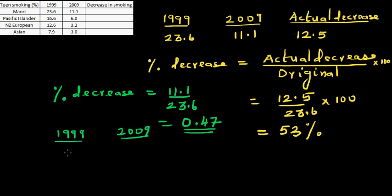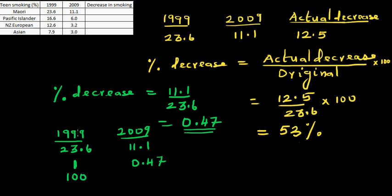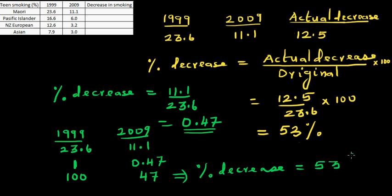We need to understand the meaning of this answer. In 1999 it was 23.6 and in 2009 it is 11.1. This number means: if in 1999 it was 1, in 2009 it is 0.47. That means if there were 100 people smoking in 1999, now there are 47 people smoking. So the percentage decrease is 53 percent.